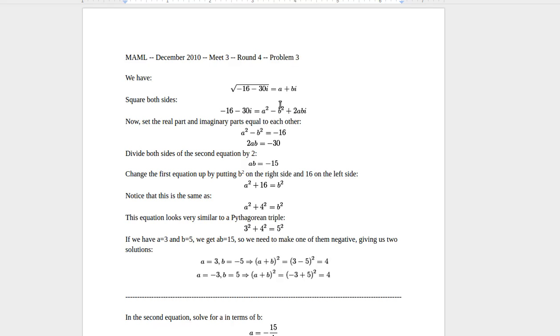Once we have this, we have a real part, negative 16 on this side, and on this side it's a squared minus b squared, and we set those equal to each other. So the real parts are equal and the imaginary parts are equal. So on this side we have negative 30i, and on this side we have 2abi, so that means 2ab equals negative 30.